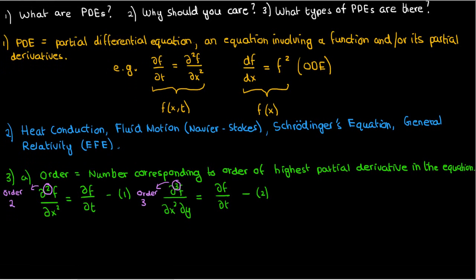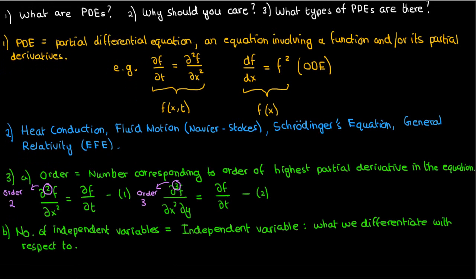Another way to classify PDEs is based on the number of independent variables. An independent variable is something we differentiate with respect to. So in the first example above, we're differentiating with respect to x and t, so there are two independent variables, x and t. While in the second example, we're differentiating with respect to x, y, and t, so there are three independent variables, x, y, and t.